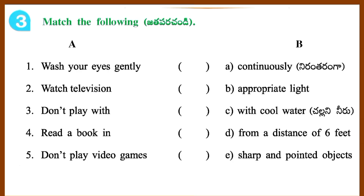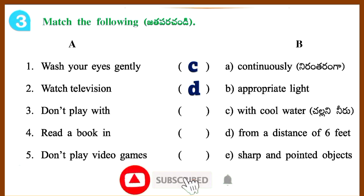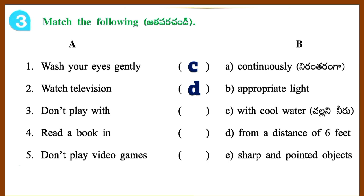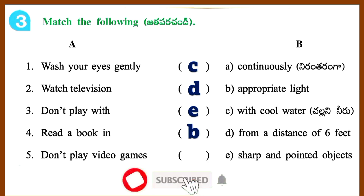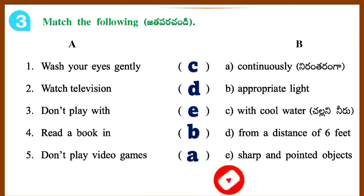Section 3: Match the following. 1. Wash your eyes gently — with cool water. 2. Watch television — from a distance of 6 feet. 3. Don't play with — sharp and pointed objects. 4. Read a book in — appropriate light. 5. Don't play video games — continuously.